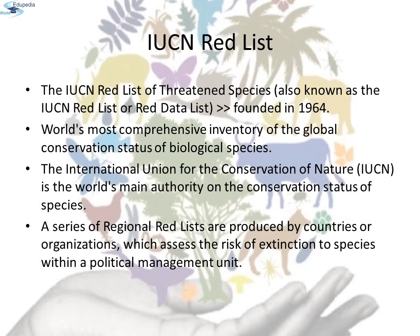What is the IUCN Red List? The IUCN Red List of Threatened Species, also known as the Red Data List, founded in 1964, is the world's most comprehensive inventory of the global conservation status of biological species. The International Union for the Conservation of Nature (IUCN) is the world's main authority on the conservation status of species. A series of regional red lists are produced by countries or organizations that assess the risk of extinction to species within a political management unit.